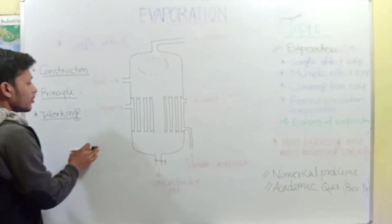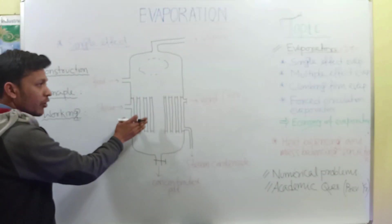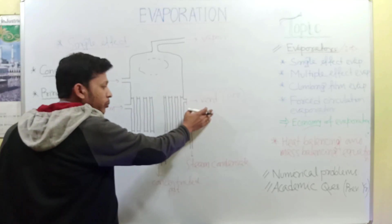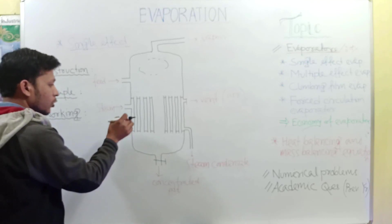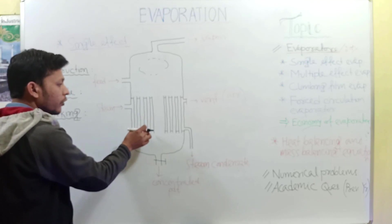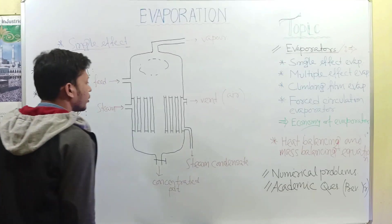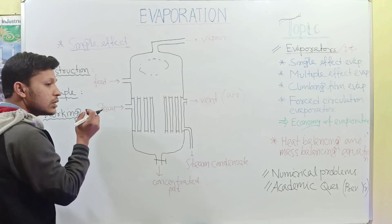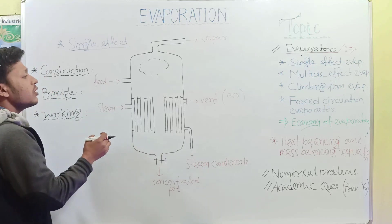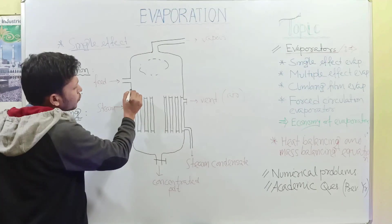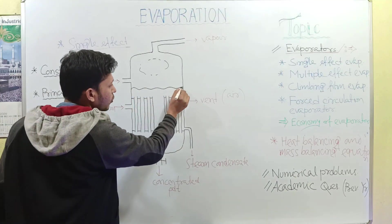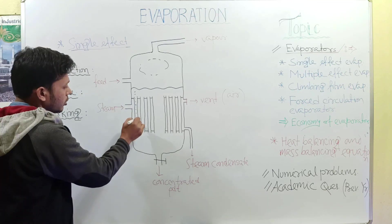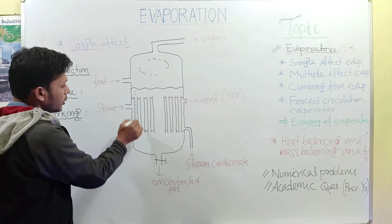Now see what is the working. In case of working, steam is introduced into the calendria. At that time, the non-condensed gas present comes out from this vent, and the condensate liquid formed into the calendria comes out through the corresponding outlet. Now you have to provide feed, and this feed has to be introduced in such a way to maintain the liquid level slightly above the tube.